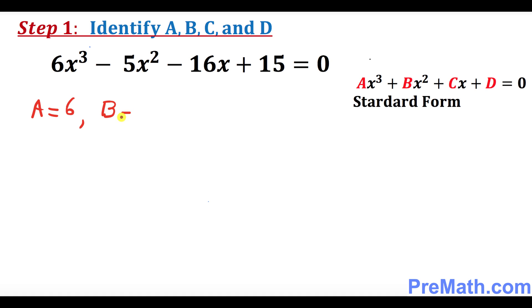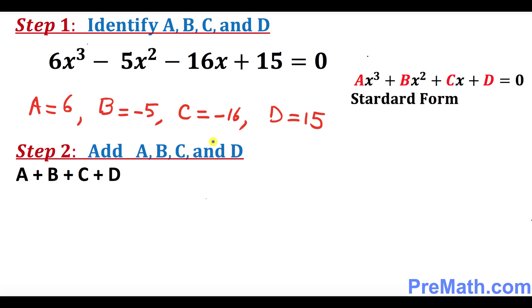b equals negative 5, c equals negative 16, and d equals 15. In step two, I want you to add a plus b plus c plus d and see what happens. So a is 6 plus b is negative 5 plus c is negative 16 plus d is 15. If you add them up, their sum turns out to be 0.